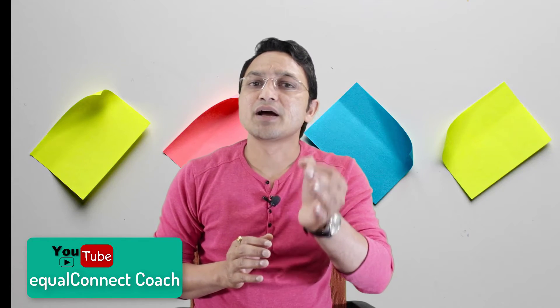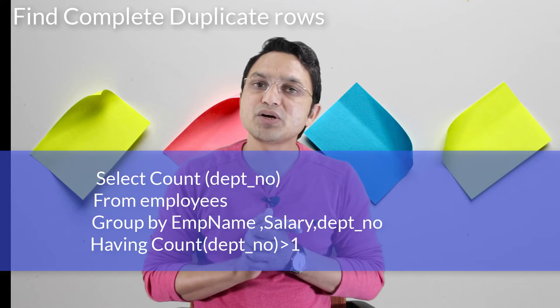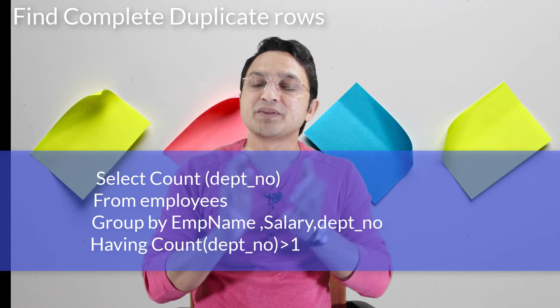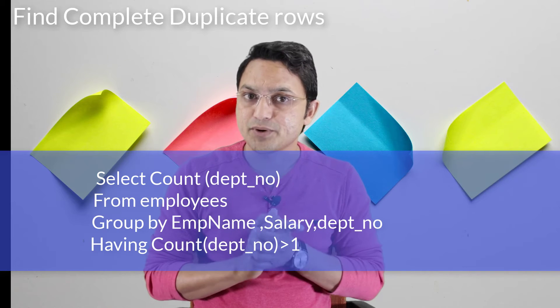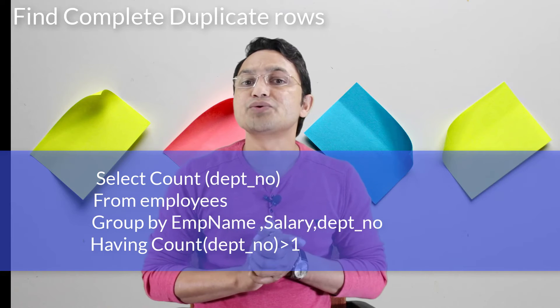Now you may ask: can you give me the exact query to find the complete row which is duplicate? For that you need to write a query like this. I am assuming these are the only columns available in the employee table. This is how you need to use it, and this is how you can find the complete duplicate record from the employee table.